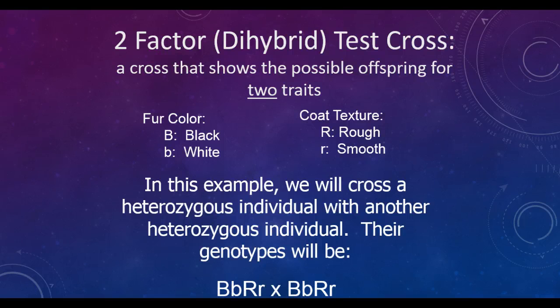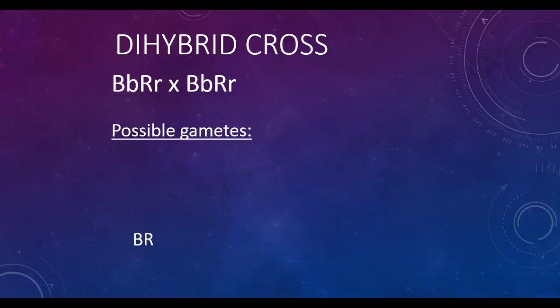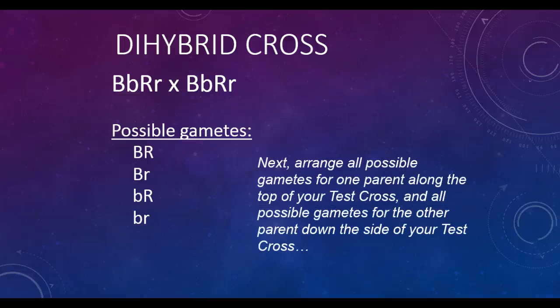The genotypes will be big B, little b, big R, little r for both parents. Our possible gametes will be big B, big R; big B, little r; little b, big R; and little b, little r. And once again, I want you to use FOIL to fill out the test cross.